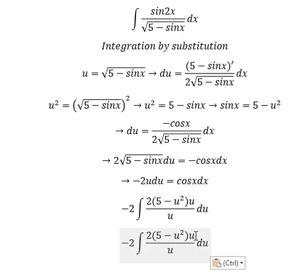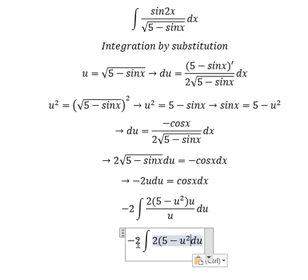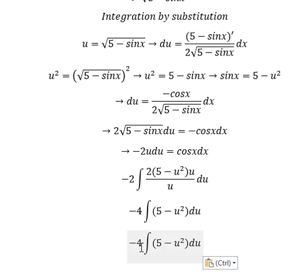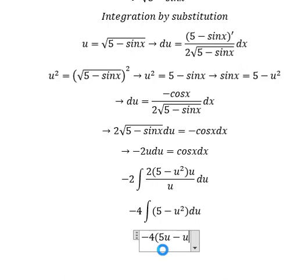Now u and u, we simplified. So number two goes here and we have number four. The integration of five, that is about five u. The next one, that is u to the power of three over three.